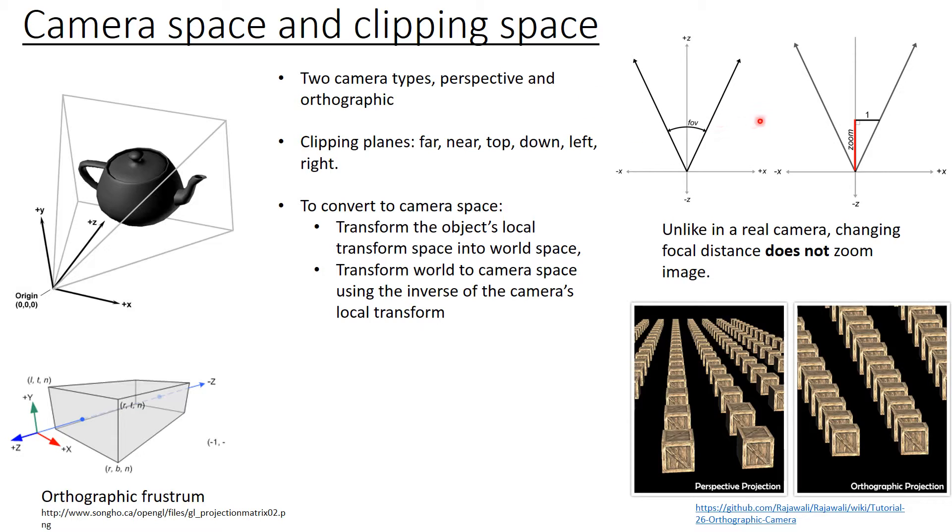In a perspective camera, we have our field of view, and this helps define the zoom. Increasing the zoom here will increase the size of the image. And like in a real camera, change of the focal distance does not zoom the image, and we must do it manually.